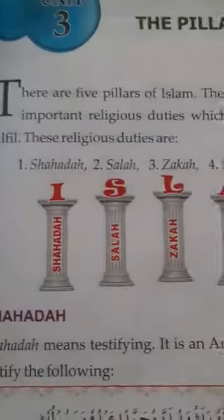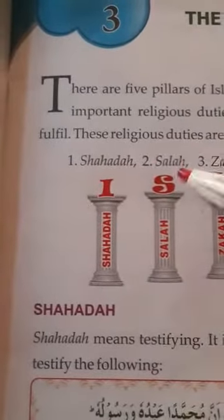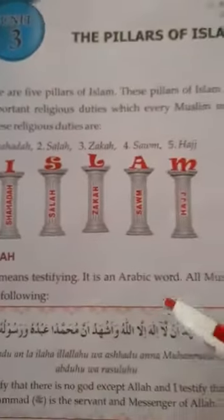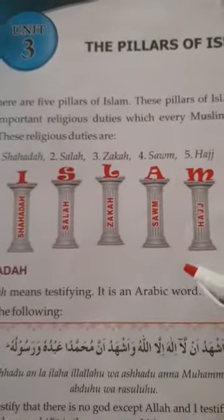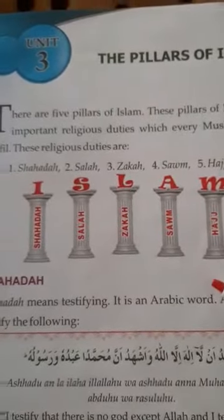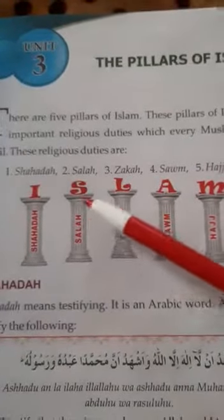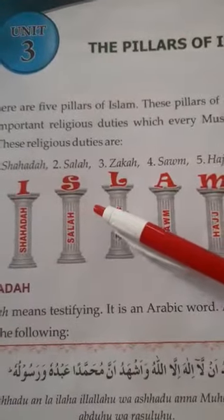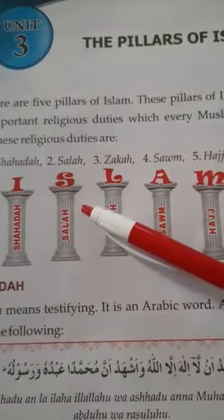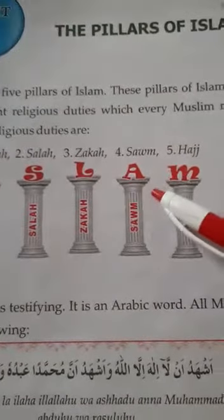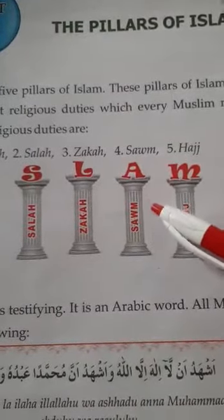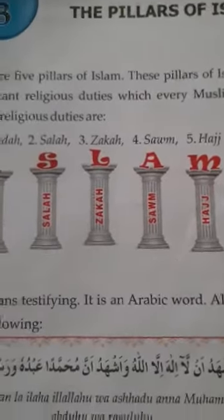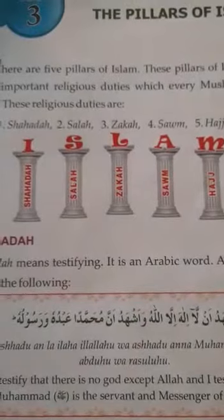Every Muslim must fulfill these 5 religious duties. Here you can see the 5 main pillars. These duties are: first, Shahada; second, Salah; third, Zakah; fourth, Saum; and fifth, Hajj. So these are the 5 Pillars of Islam.